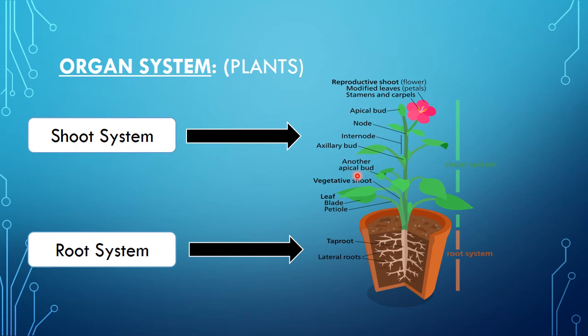Axillary bud chai saakje tho. Apical bud is that which is present at the apex, i.e., the tip. Vegetative shoot — yaane stem, leaves, blade, and petiole. Blade is the leaf's surface, and petiole is the leaf's tip or stalk by which the leaf is attached to the stem.